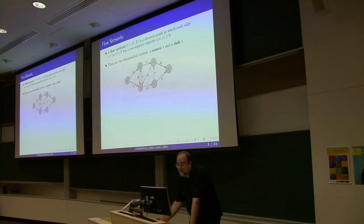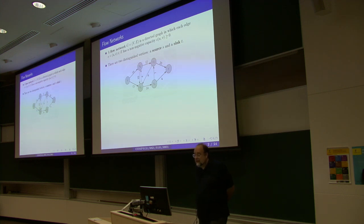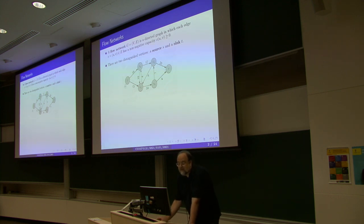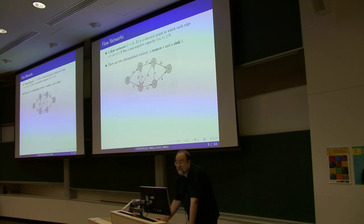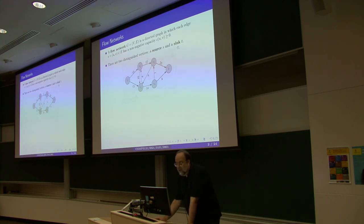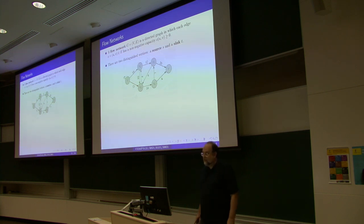You have two distinguished nodes of the graph: S and T. S is called source and T is called sink. The way to think about that is, for example, S is an iron ore mine somewhere in Australia, and T is China. In the flow network, from the mine, you have several options for how to get ore to China.